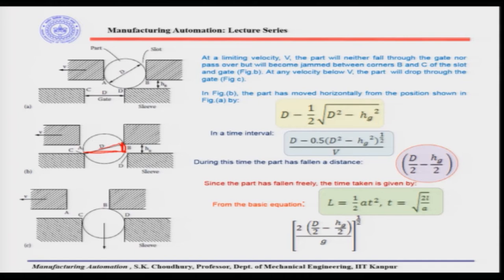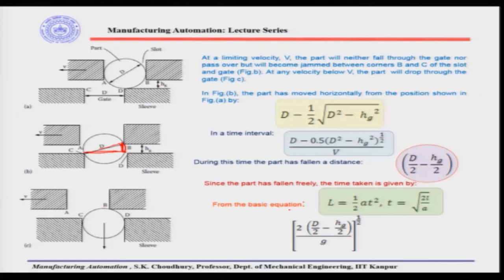The velocity at which the part is falling down through the gate is what we are considering. The vertical distance is due to gravity, so the time can be found from the standard equation L = ½at², giving t = √(2L/a). Here the distance L is the vertical distance, so this is 2 times L divided by the acceleration.